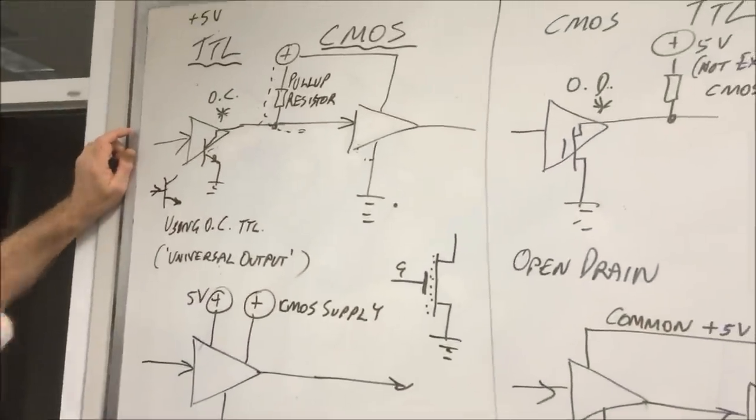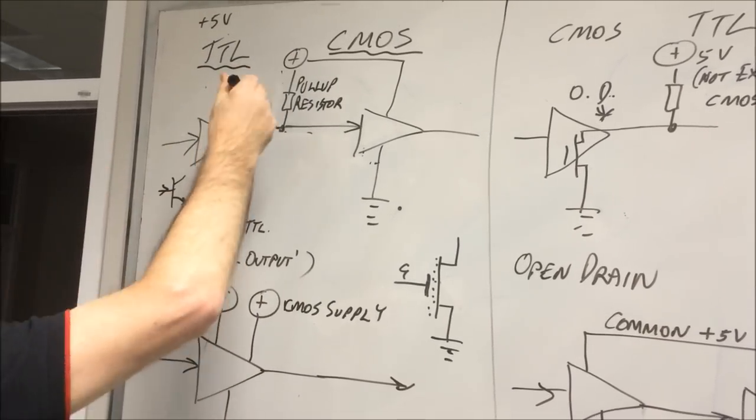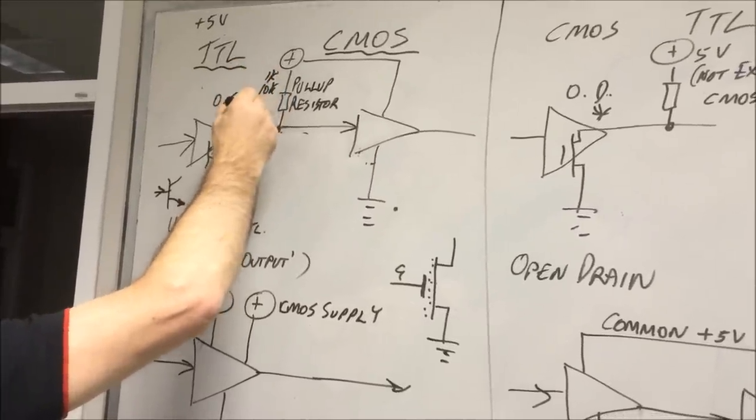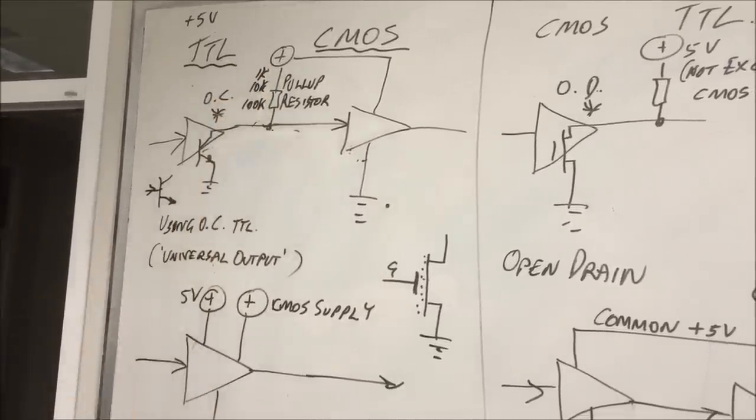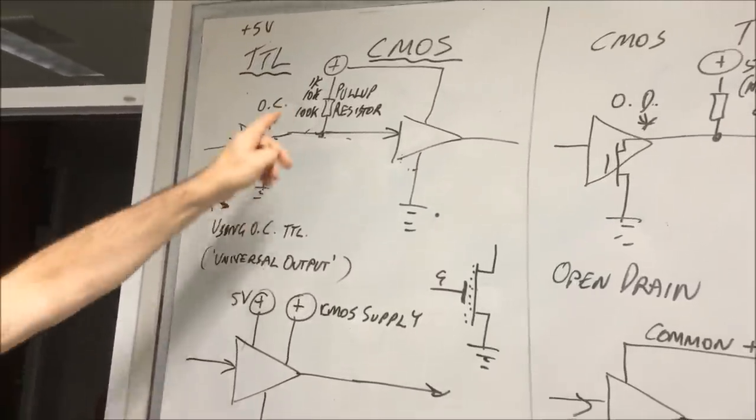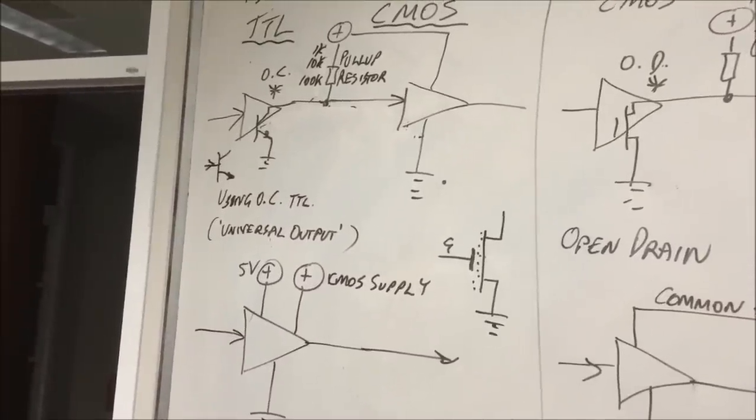Good values for this resistor here, typically 10k, 1k, maybe 100k, something in that region. Now you think 10k because we're assuming that the CMOS can charge the capacitance up quickly to overcome any leakage currents.